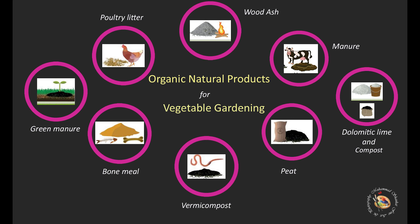Fish emulsion is a liquid organic fertilizer made from fish waste. It contains a balanced mix of nutrients including nitrogen, phosphorus, and potassium, and is readily absorbed by plants. Green manure refers to cover crops such as clover, vetch, or alfalfa that are grown and then tilled into the soil to improve fertility; as they decompose, they release nutrients and organic matter back into the soil. Wood ash from hardwoods like oak or maple can be used as a source of potassium and some trace minerals.